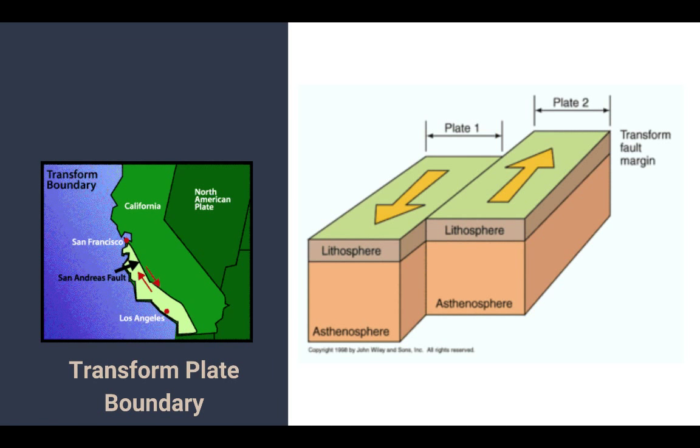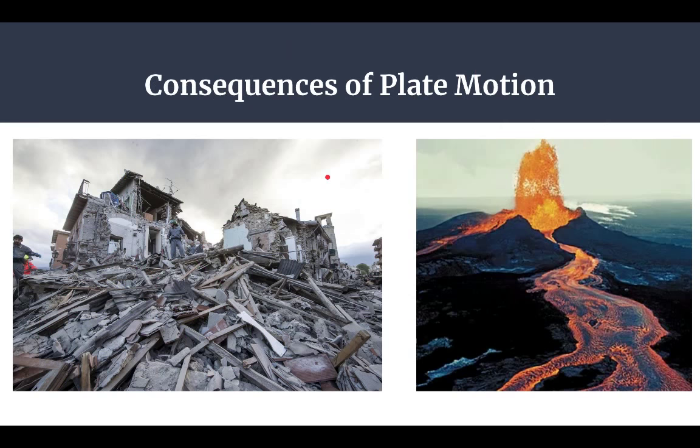And the last one is what we have is transform. So we don't have any colliding. We don't have any separating. What we have is they're sliding past each other. And California, the San Andreas Fault, is a perfect example. Notice there's no volcanic activity. But as we all know, in California, you have a high occurrence of earthquakes. Make sure you understand the three types of plate boundaries.